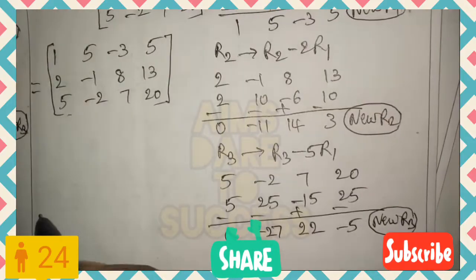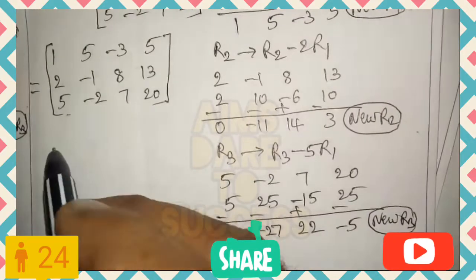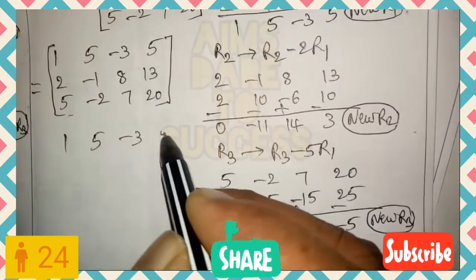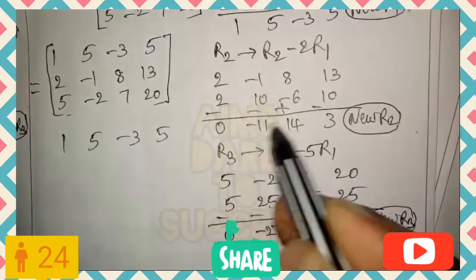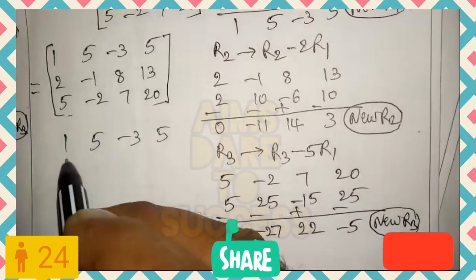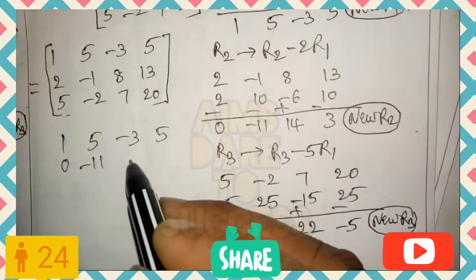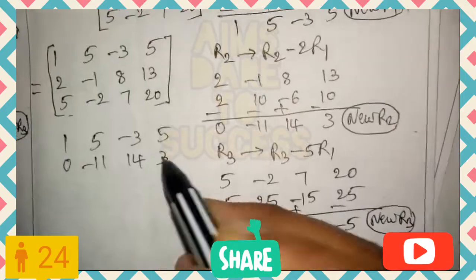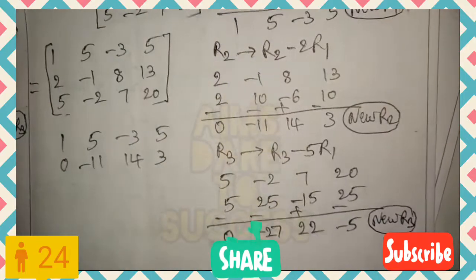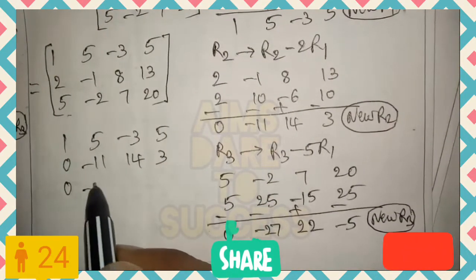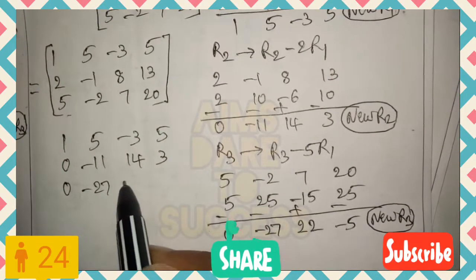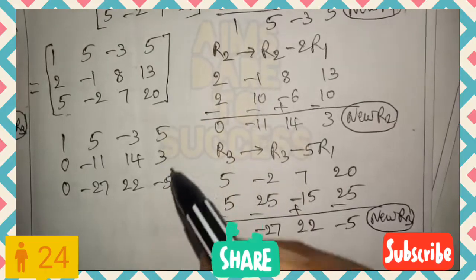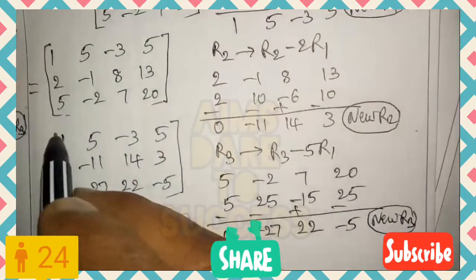After replacing with the new row values, R1 remains 1, 5, -3, 5. New R2 is 0, -11, 14, 3. New R3 is 0, -27, 22, -5. In the first column we have achieved 1, 0, 0.